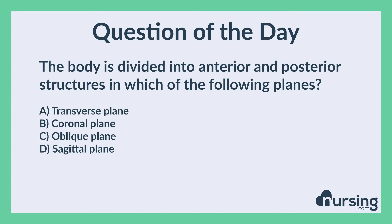The body is divided into anterior and posterior structures in which of the following planes? A. Transverse plane. B. Coronal plane. C. Oblique plane. D. Sagittal plane.